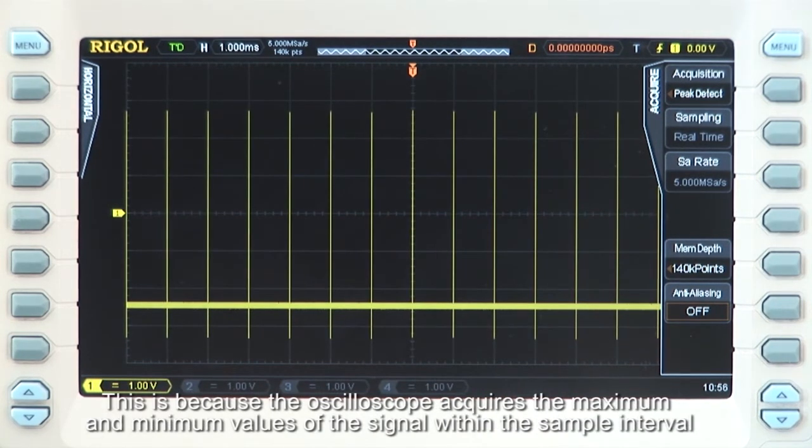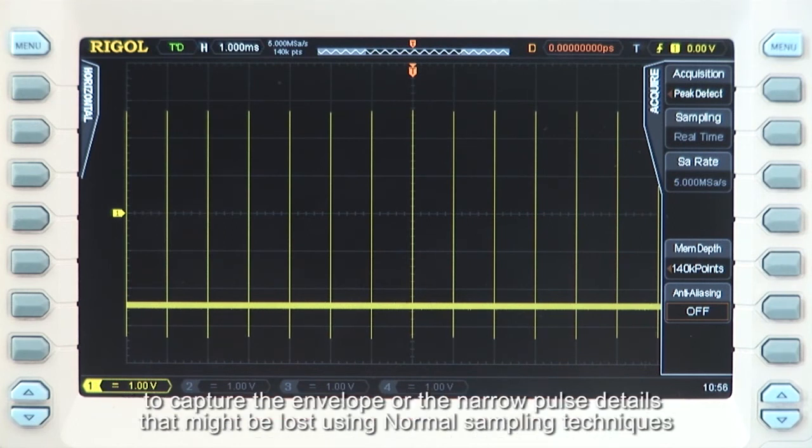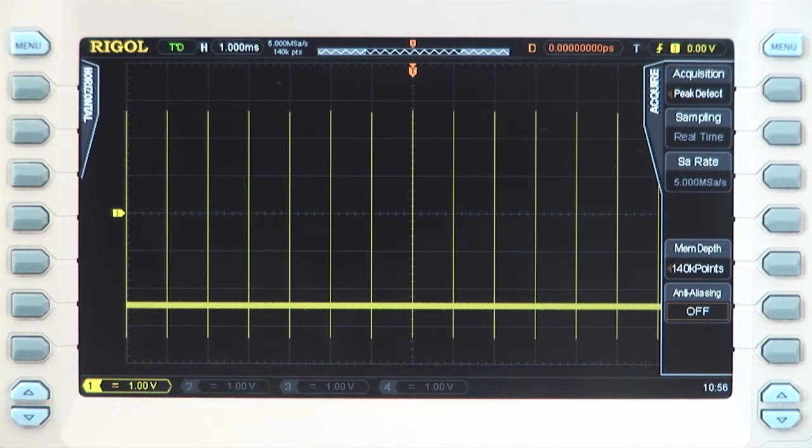This is because the oscilloscope acquires the maximum and minimum values of the signal within the sample interval to capture the envelope or the narrow pulse details that might be lost using normal sampling techniques.